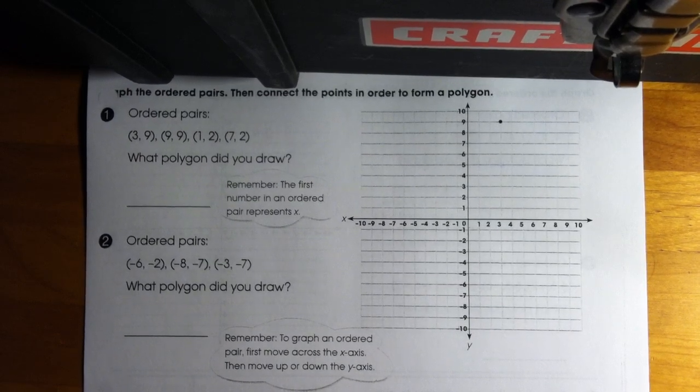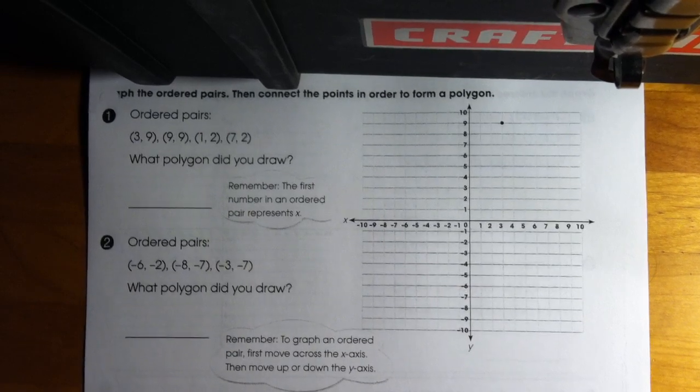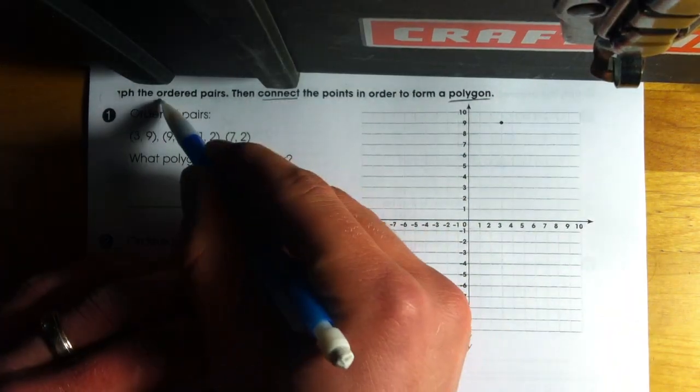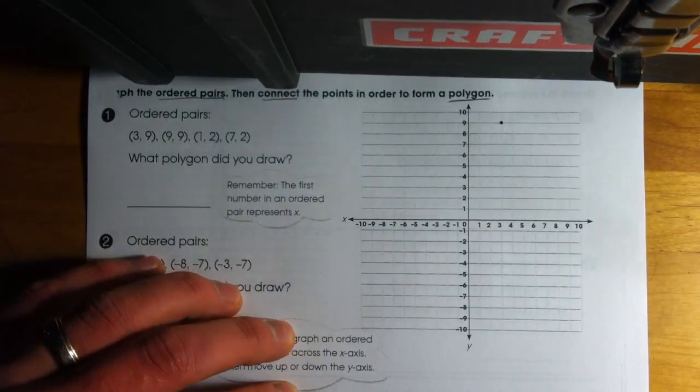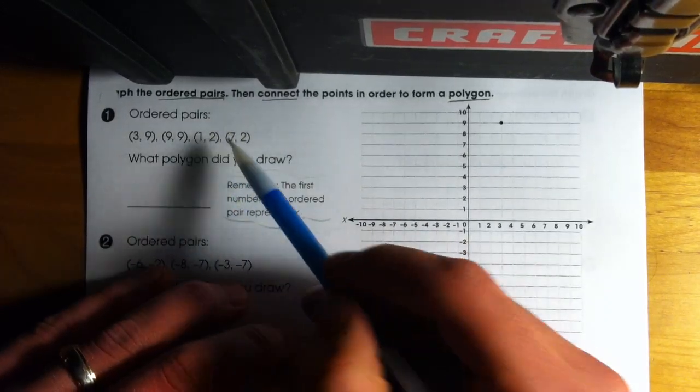So if I look at our first question, it says graph the ordered pairs, then connect the points to form a polygon. We're going to identify exactly what that means. We've got to connect the points and graph the ordered pairs. If I look at question one, it lists four ordered pairs below.